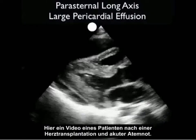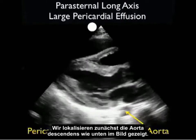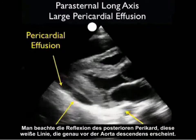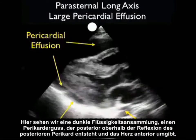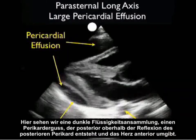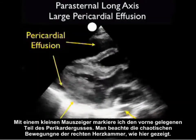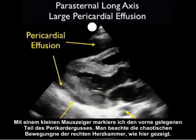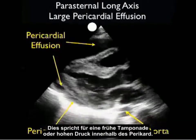Here's a clip taken from a patient who presented with a transplanted heart and acute shortness of breath. We'll begin by identifying the descending aorta, then the posterior pericardial reflection — that white line coming off just anterior to the descending aorta. What we see here is the presence of a dark fluid collection, a pericardial effusion that layers out posteriorly above the posterior pericardial reflection and comes anteriorly to surround the heart. With a small indicator arrow, I'll point to the anterior portion of the pericardial effusion and note the chaotic movement of the right ventricle. This is indicative of early tamponade or high pressures within the pericardial sac.